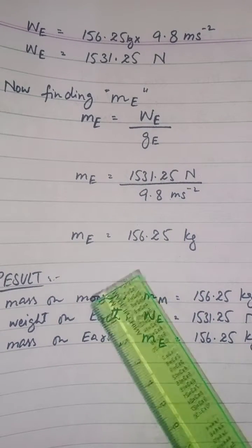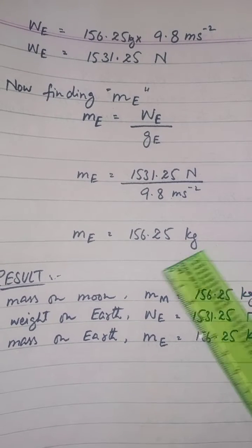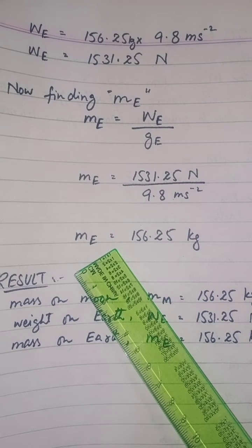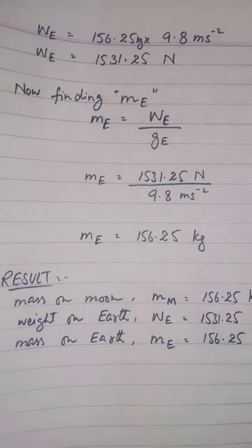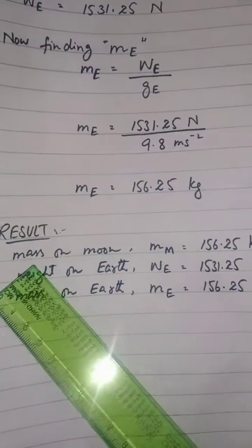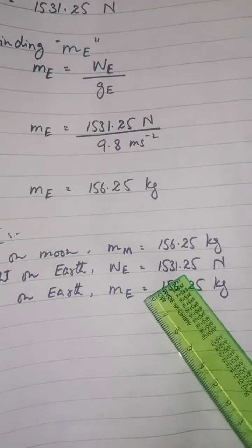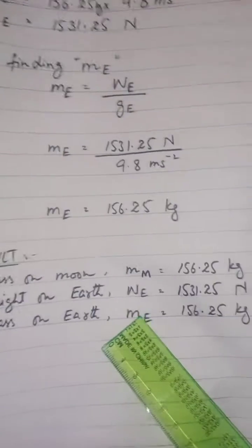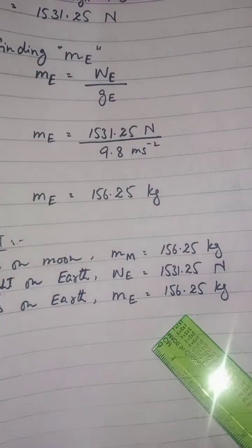Dividing those values, the mass on earth equals 156.25 kg. Note that mass is a constant quantity — it remains constant everywhere. So the mass on moon equals 156.25 kg, weight on earth equals 1531.25 Newton, and the mass on earth is also 156.25 kg.